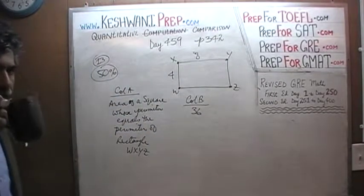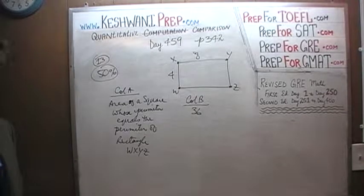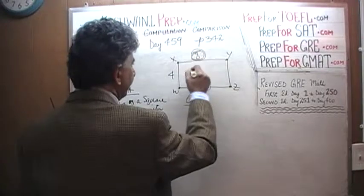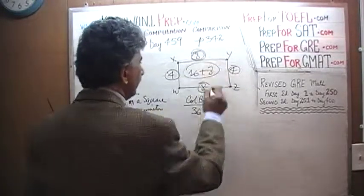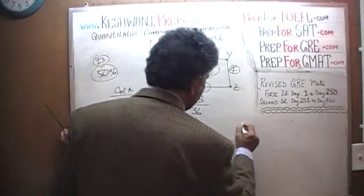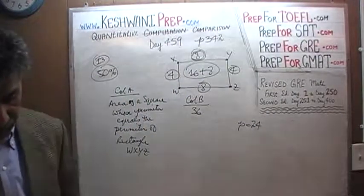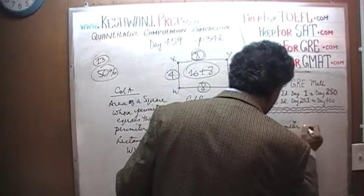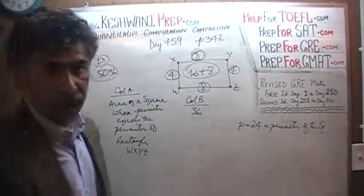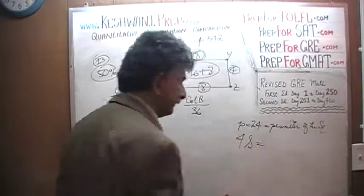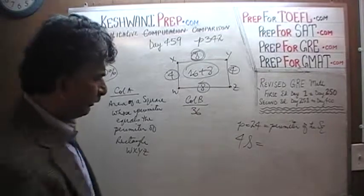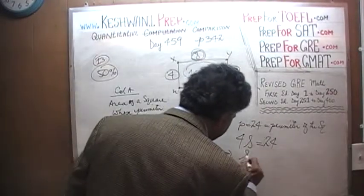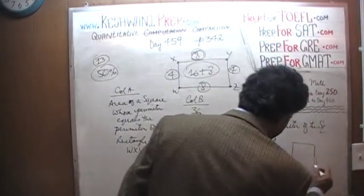The perimeter of the rectangle is 8 plus 8 plus 4 plus 4, which is 16 plus 8, which is 24. That perimeter has to be the same as the perimeter of the square. The perimeter of a square is 4 times the side length. So 4 times each side equals 24, which implies that each side must be 6. The square we are dealing with is 6 by 6.